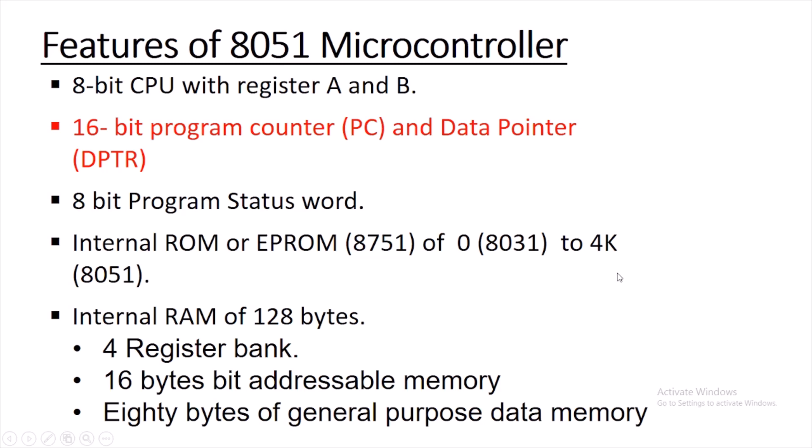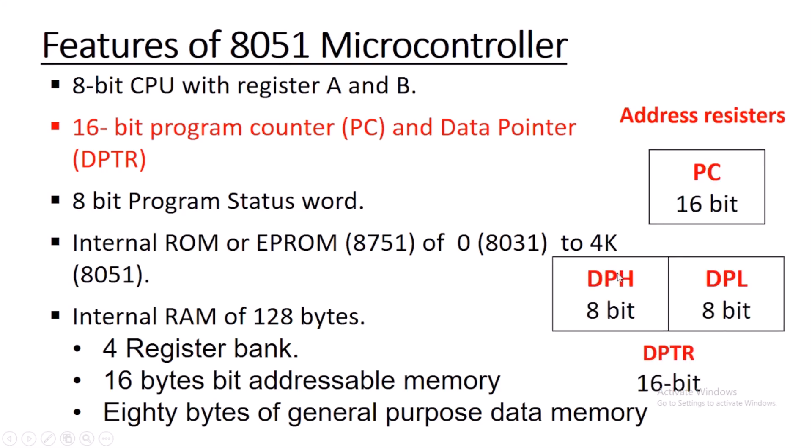8051 is having a 16-bit program counter (PC) and data pointer register (DPTR). Both are known as address registers — they are used to store an address which will ultimately point to data stored in a memory location. The program counter points to a location from where instructions will be fetched and executed by the microcontroller, whereas the data pointer (DPTR) points to a memory location from where data is fetched, and we can change the content of DPTR.